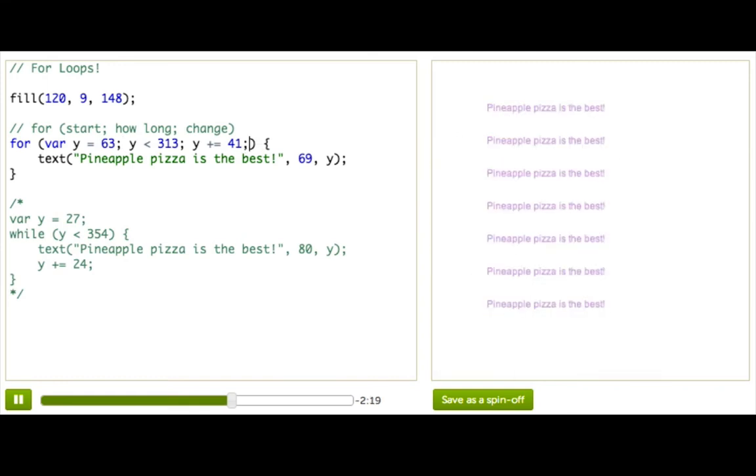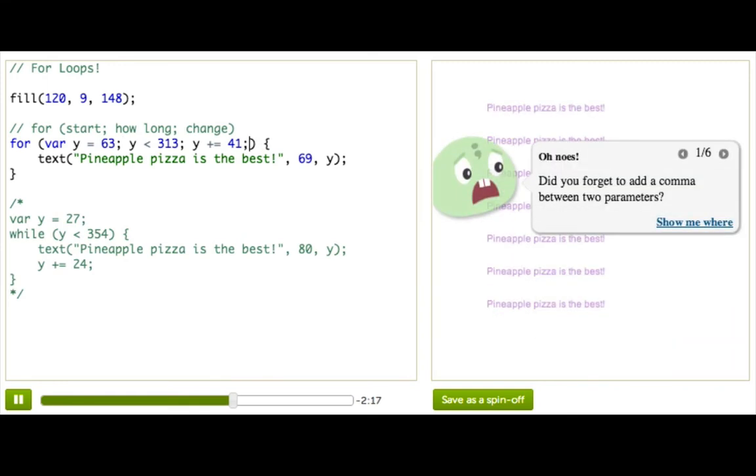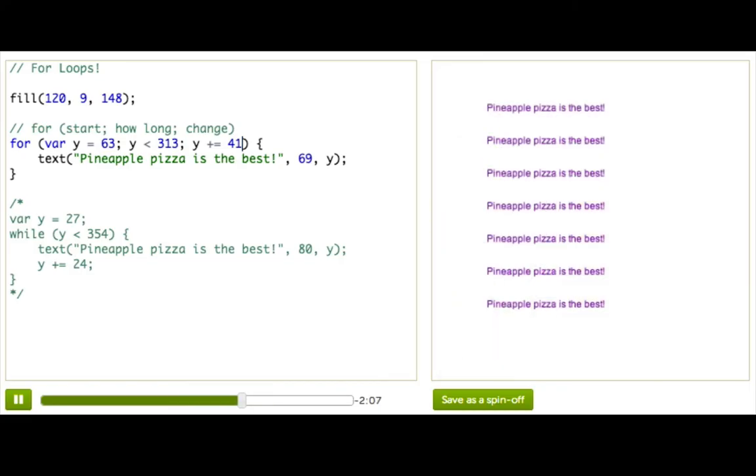You also might get over-enthusiastic and add an extra one at the end. But if you just remember that semicolons are only there to separate the three parts, then we can say that, well, this last semicolon isn't separating anything, it's just kind of trailing on there. We can get rid of it, because we don't need it.